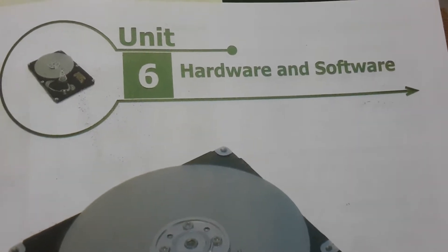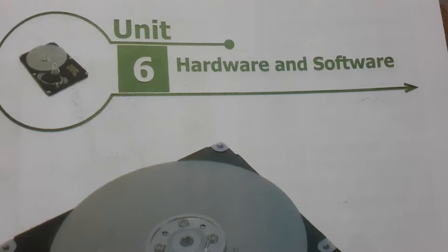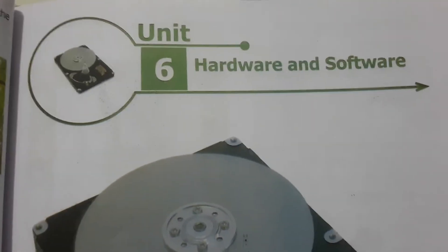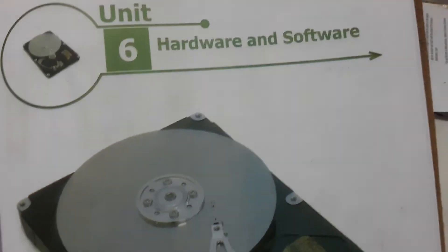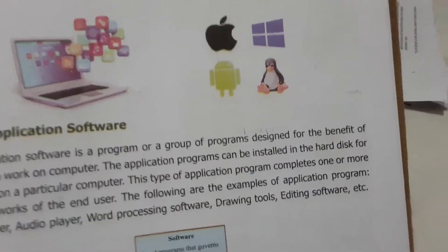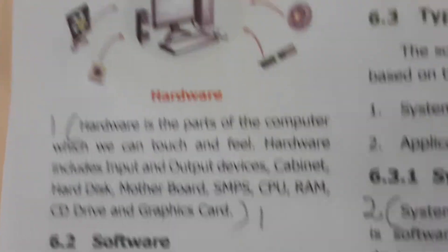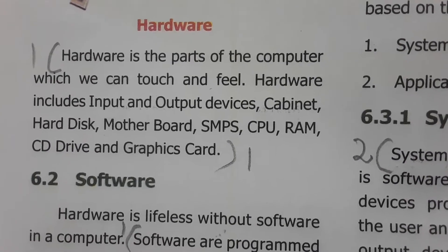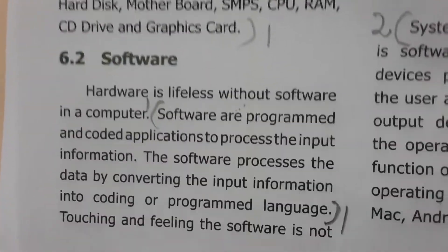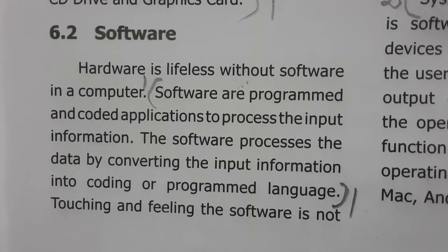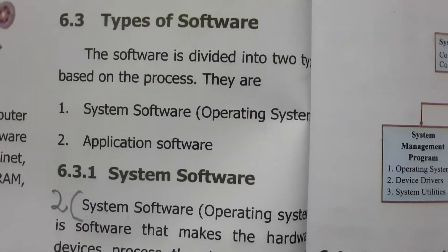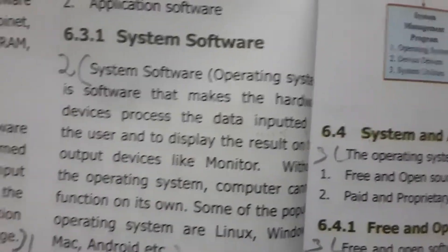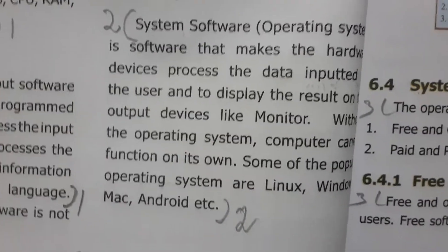Don't skip anywhere in between, as you may miss some main points. So let's see the lesson. What is hardware and software? Hardware is nothing but the parts of the computer that you can feel by touching, whereas software is programmed and coded applications to process the input information.